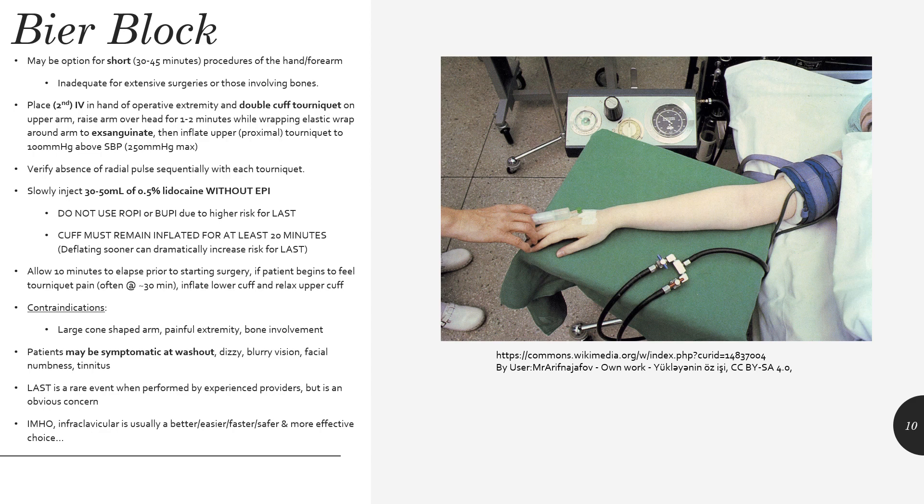For most upper extremity procedures, an infraclavicular or supraclavicular block is often a better choice, providing longer-lasting analgesia, postoperative pain control, and a denser block. The Bier block is something you should know about and have a basic understanding of how to perform, but for many practitioners it's not something done frequently.